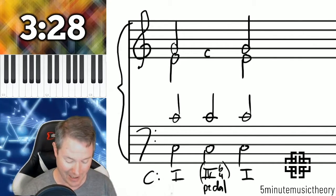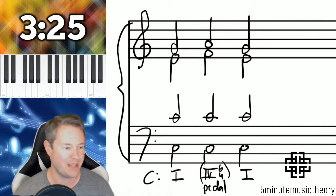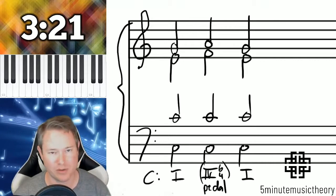So now we need an F and an A. And here we go. Here they are right there. D-F-A. That's our root position followed by a pedal 6-4 back to root position.